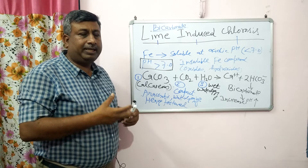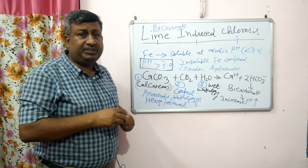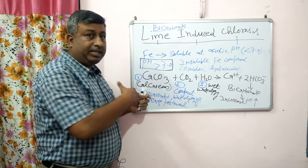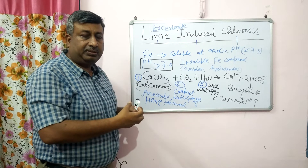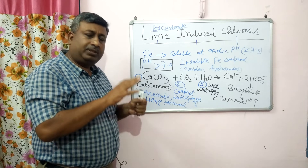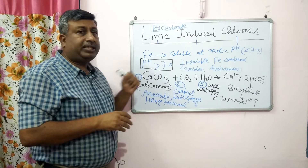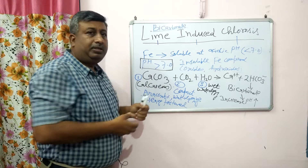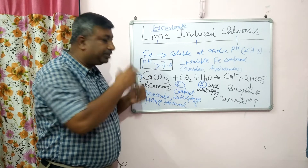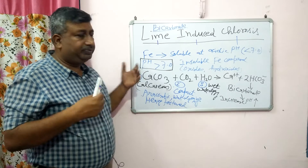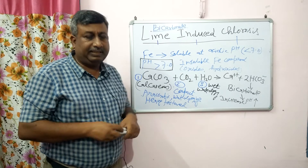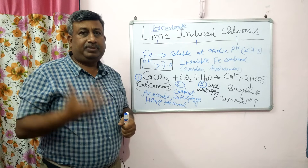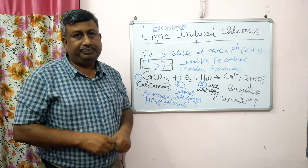How can we overcome or correct this deficiency? If moisture content is high, drain the soil and dry it so that anaerobic conditions are not maintained. For compact, heavy-textured, or waterlogged soils, drainage is essential. Also try to reduce the calcium carbonate content by using soil amendments to reduce CaCO3. This is lime-induced chlorosis, which is due to poor availability of iron. Thank you very much.